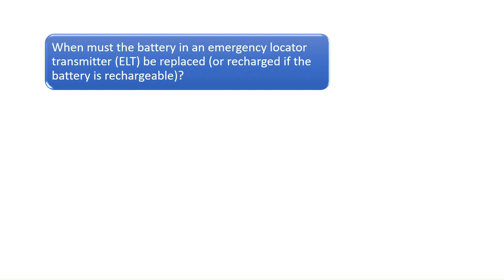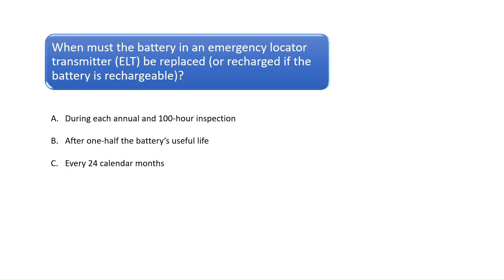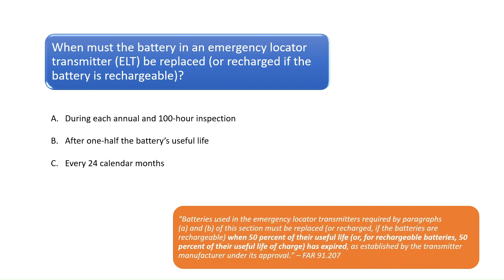Question 4: When must the battery in an emergency locator transmitter (ELT) be replaced or recharged if the battery is rechargeable? According to FAR Part 91.207, batteries in an emergency locator transmitter must be replaced or recharged — if the battery is rechargeable — after 50%, or one-half, of their useful life. The correct answer is B.